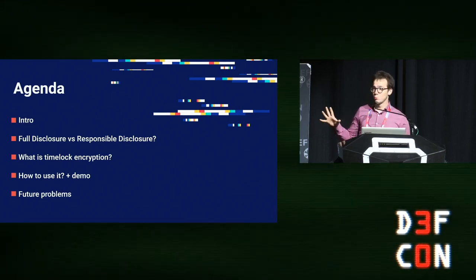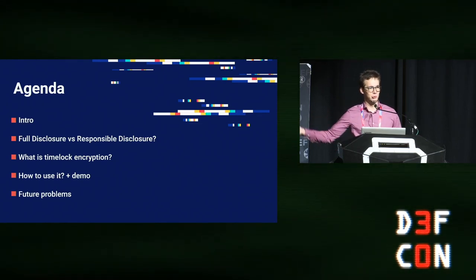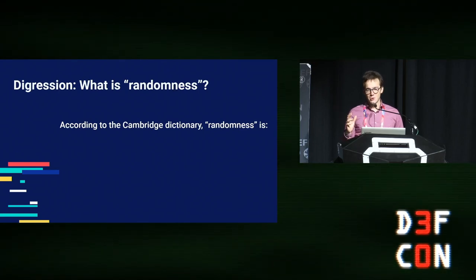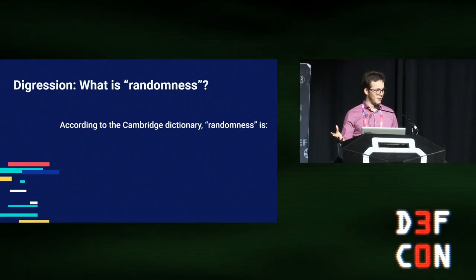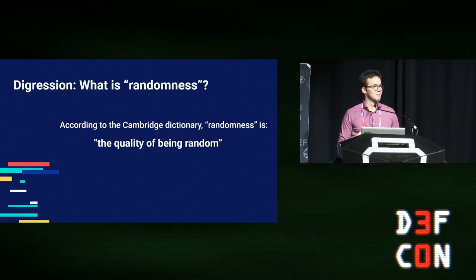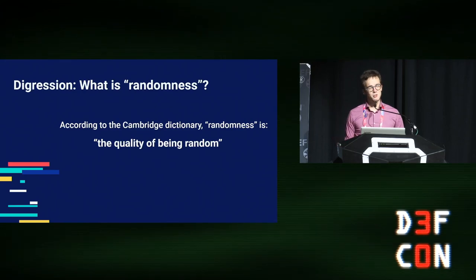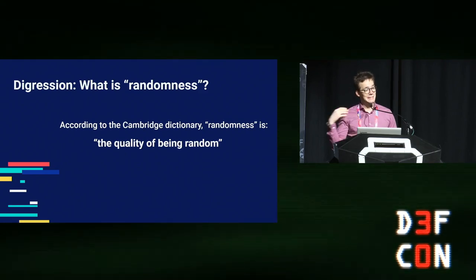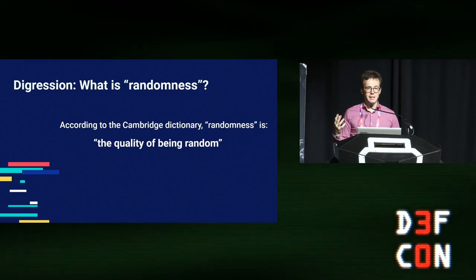We'll also talk about what can go wrong when we're talking about the future. To start with preliminaries: do you know what randomness is? According to the dictionary, randomness is simply the quality of being random — not super useful. I prefer to see randomness as the quality of being unpredictable or lacking any pattern.